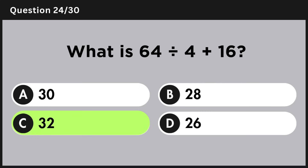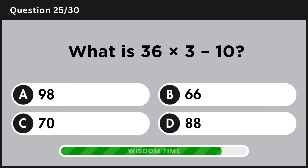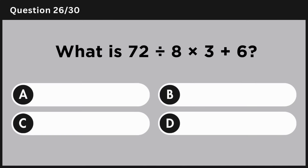What is 64 divided by 4 plus 16? Answer C: 32. What is 36 multiplied by 3 minus 10? Answer A: 98. What is 72 divided by 8 multiplied by 3 plus 6?